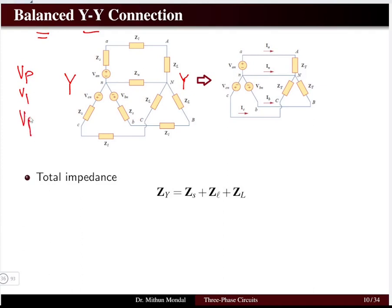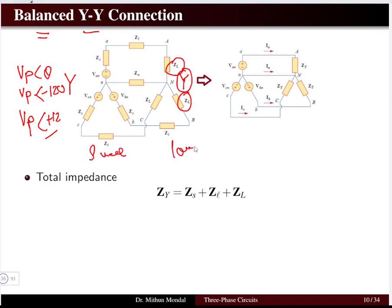We discussed in the previous lecture that if the system is balanced, the magnitude of all three phases will be equal. We will have equal magnitude of voltage but with a phase difference — zero degrees, minus 120 degrees, and plus 120 degrees — giving a 120-degree phase difference between all three phases. For the load, the impedances' magnitude as well as phase will be equal. The line impedance is represented by Z_L and the load impedance by capital Z_L.